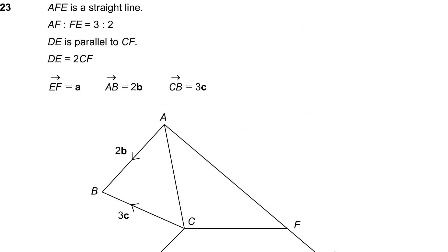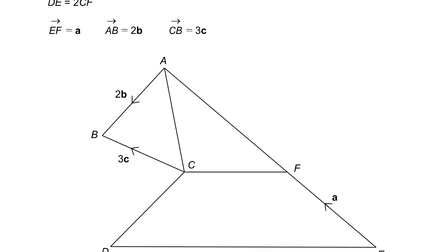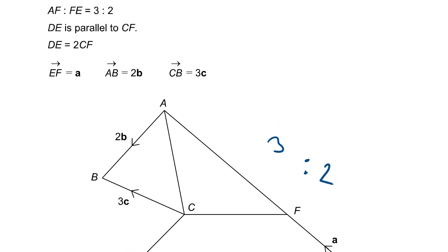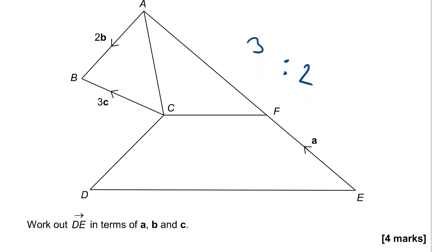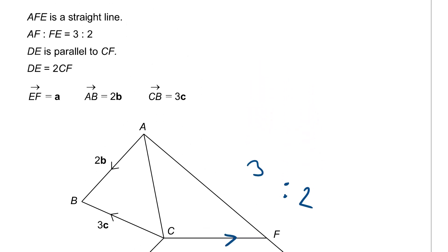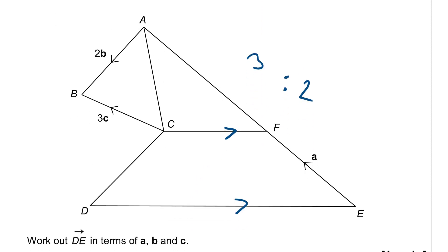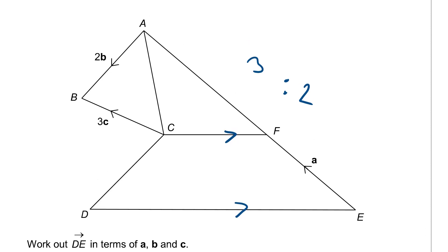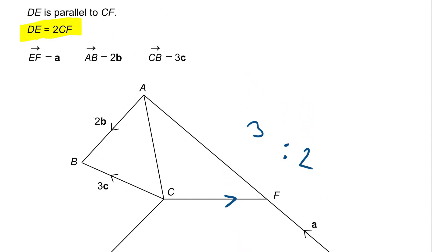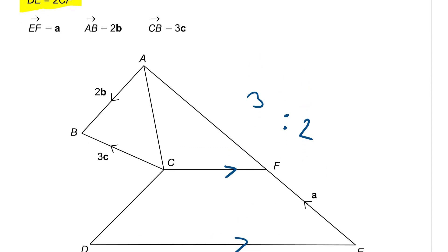Question 23 is a vectors problem. A, F, E is a straight line and A to F to F to E is in the ratio of 3 to 2. We are told that DE is parallel to CF and DE equals 2 lots of CF. I haven't added that onto the diagram yet, so I'm just going to highlight it for myself to remember that I haven't used it.